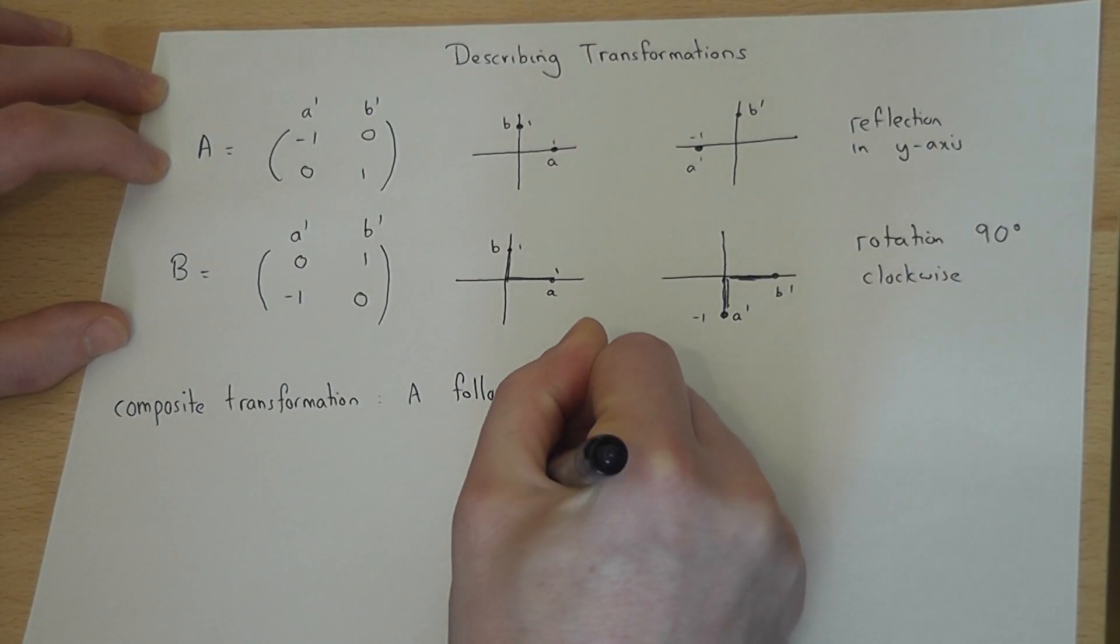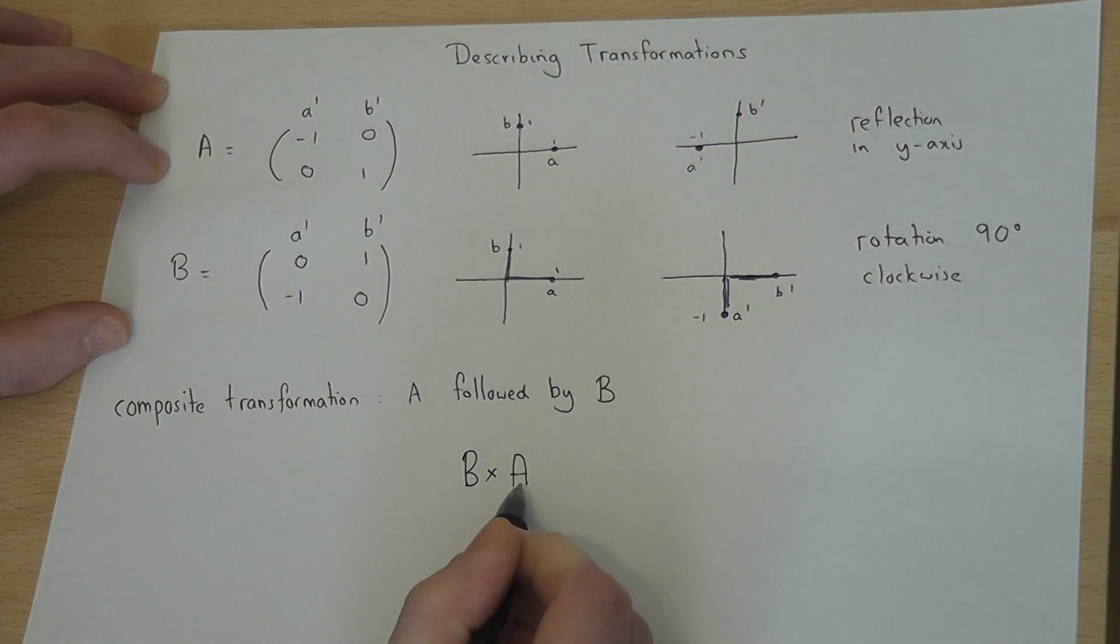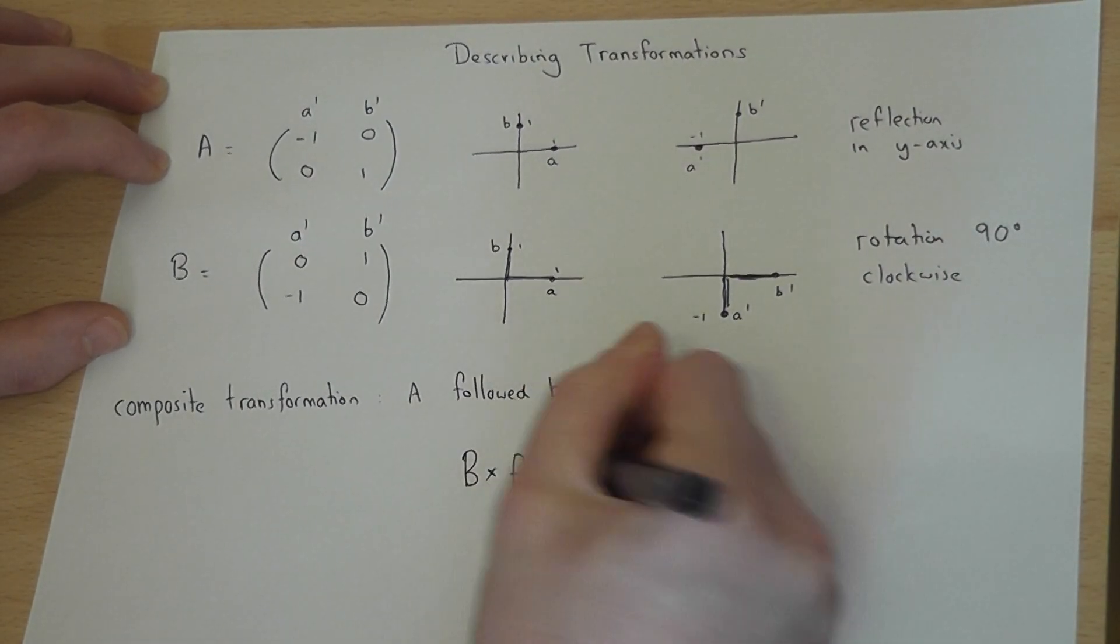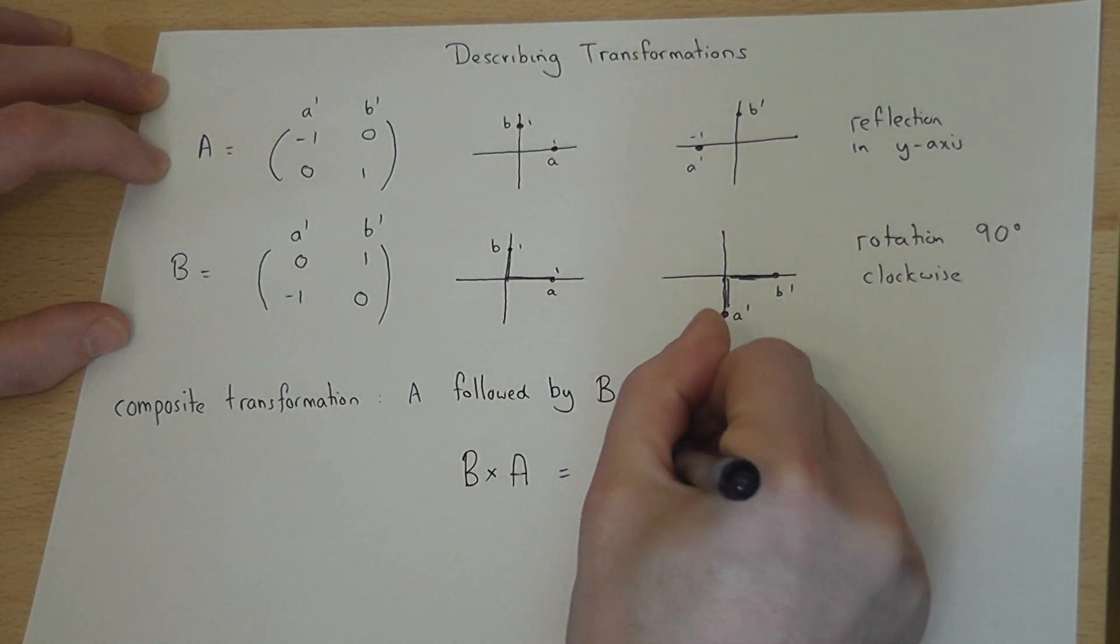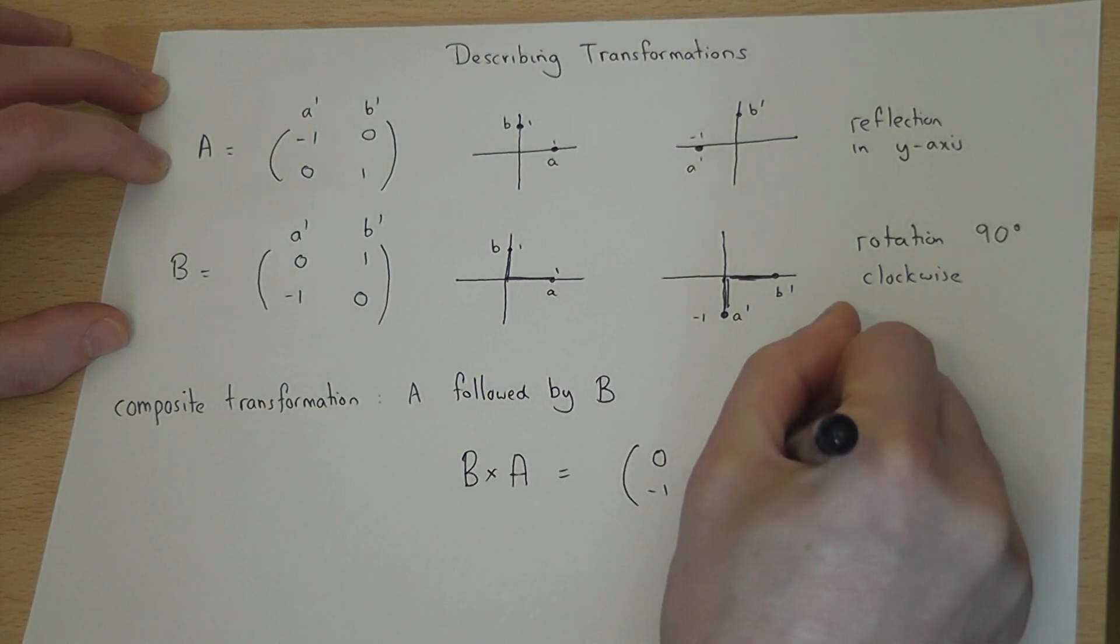We begin with A, and we follow it with B. And we follow from the left, so A followed by B. That's quite key, let me keep that order. So we've got to work out what B times A is.